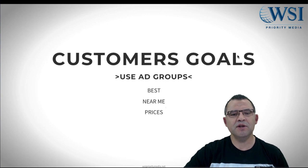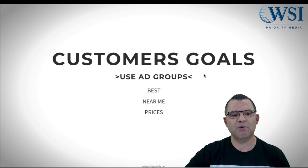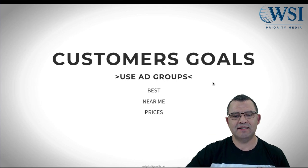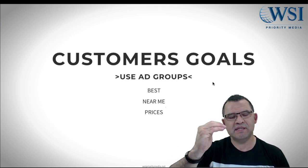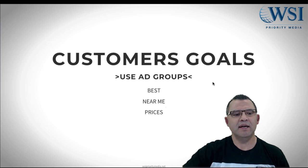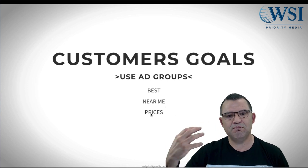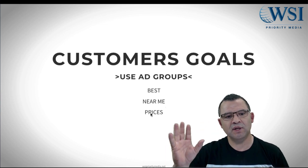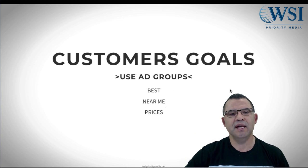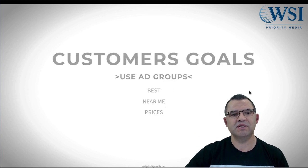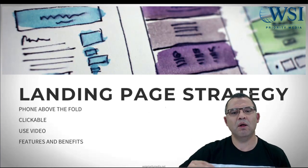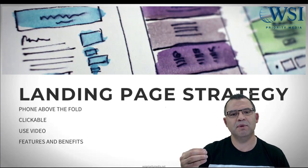The next thing is understanding customer goals — what they want — and using ad groups to separate those. Let's say someone is looking for the best cosmetic dentist. You want to make sure your ad group has specific verbiage about that. Now let's say they're searching for 'cosmetic dentist near me' or 'cosmetic dentistry prices.' You can really address their goals based on their search and segregate your ad groups to speak to them. A confused mind will always bounce — you don't want them leaving.